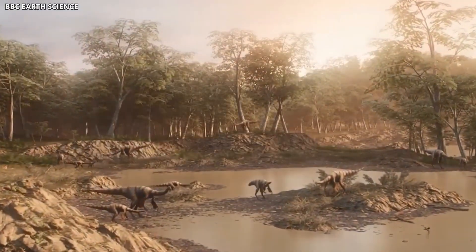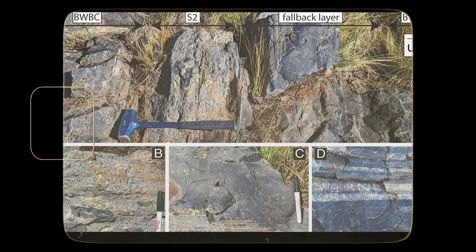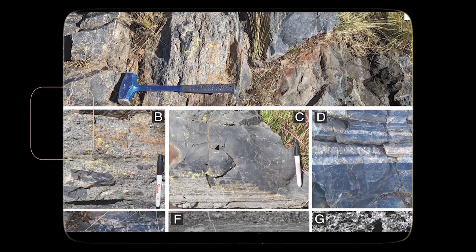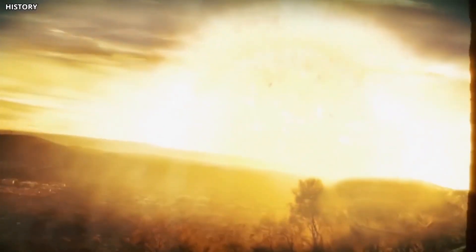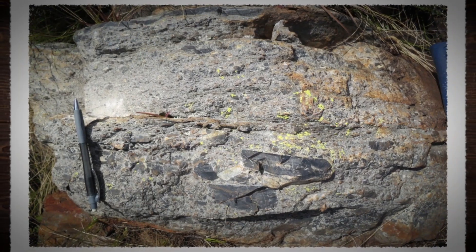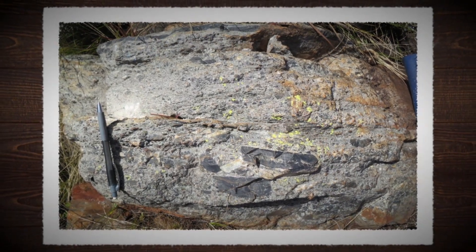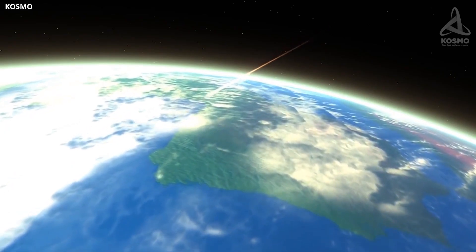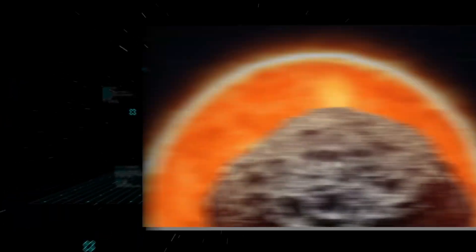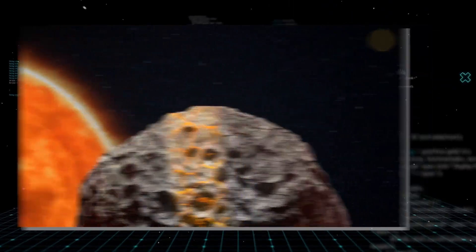The skies darkened, weathering and erosion on land intensified, and we can still see evidence of this in some of the ancient deposits scientists have recovered. Conditions like these would have wiped out modern life, but somehow, ancient life persisted. And what's even more fascinating is how this event affected photosynthetic life, the kind that uses sunlight to create energy.